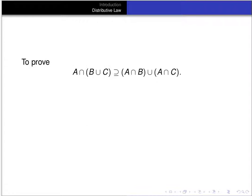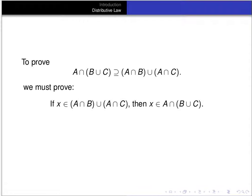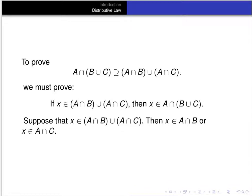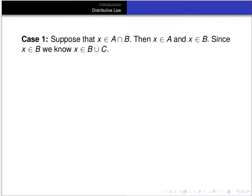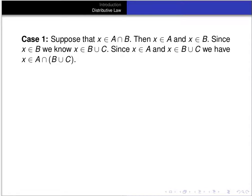Now let's prove the subset relation in the other direction: that (A∩B)∪(A∩C) ⊆ A∩(B∪C). We must show that if x is in (A∩B)∪(A∩C), then x is in A∩(B∪C). Suppose x is in (A∩B)∪(A∩C), so x is in A∩B or in A∩C. Case one: x is in A∩B. Then x is in A and x is in B. Since x is in B, it's in B∪C. Since x is in A and in B∪C, x is in A∩(B∪C).